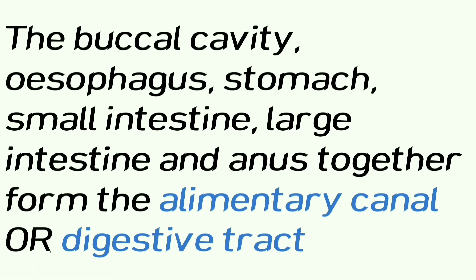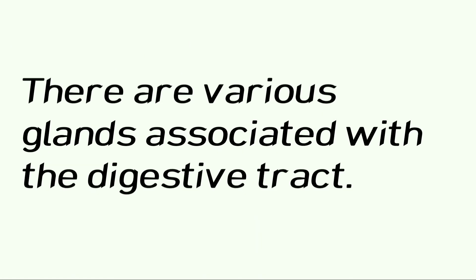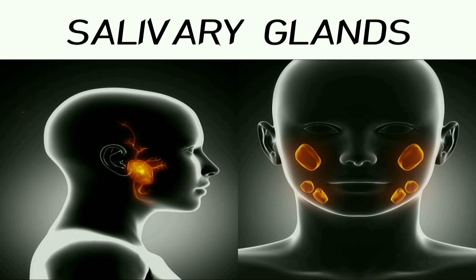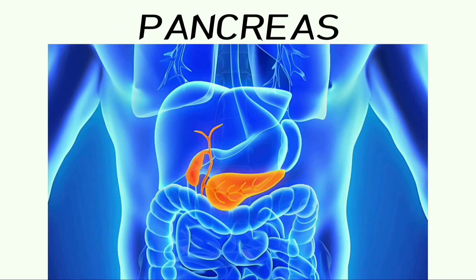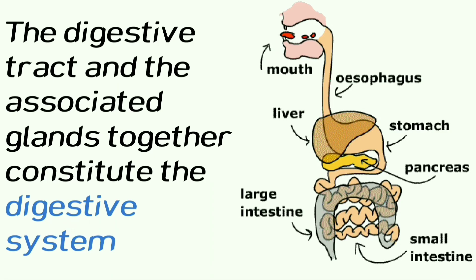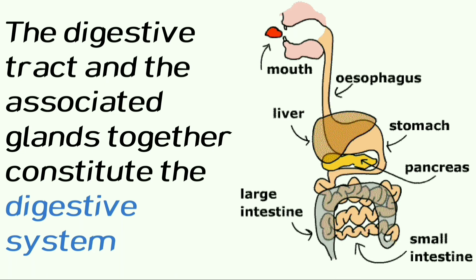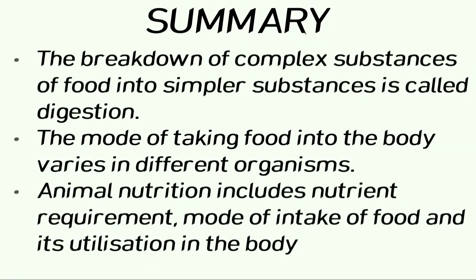There are various glands associated with the digestive tract: the salivary glands, liver, and pancreas. The digestive tract and the associated glands together constitute the digestive system.